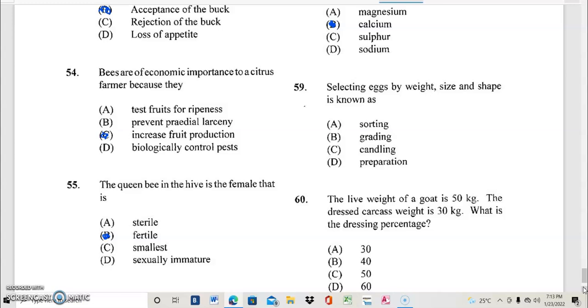Question 59. Selecting eggs by weight, size, and shape is known as? And the best possible answer for question 59 is it is known as grading, B.